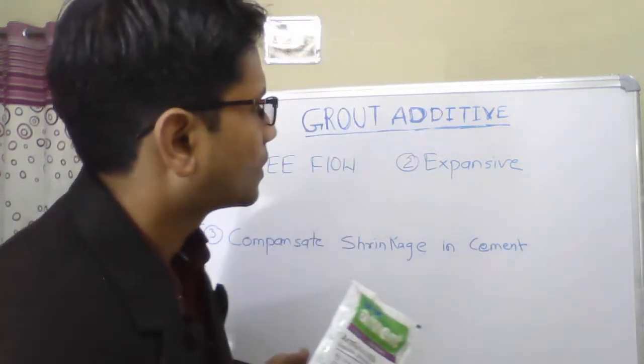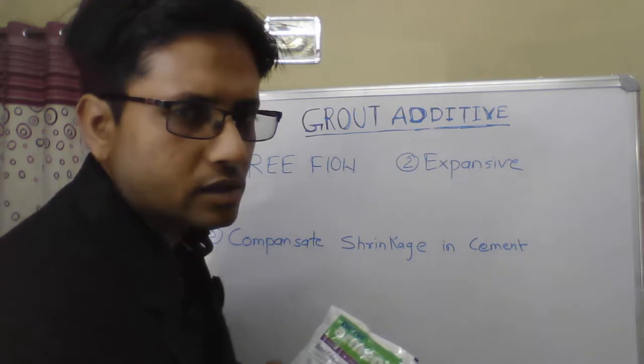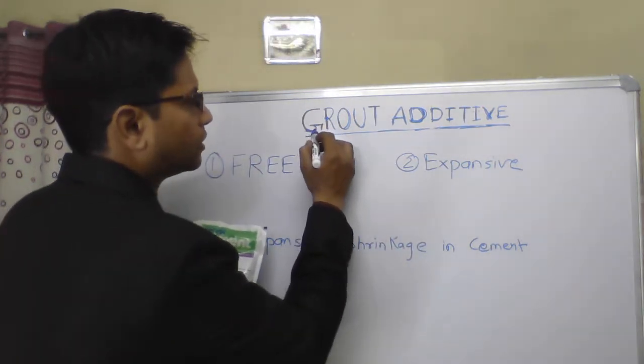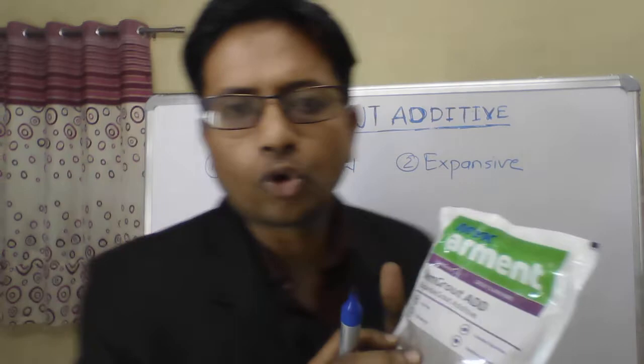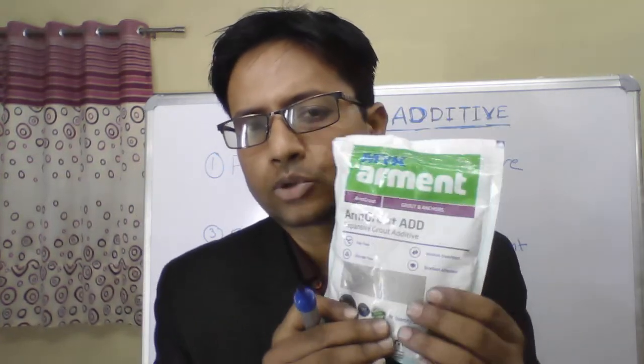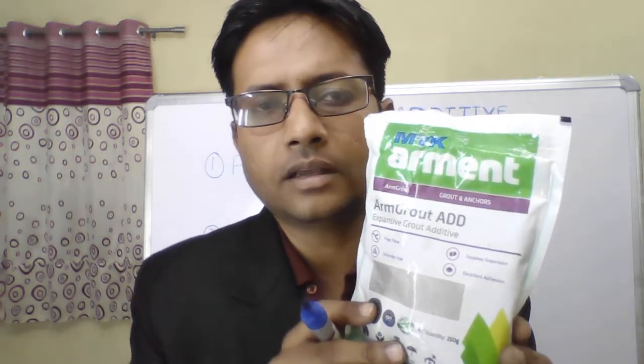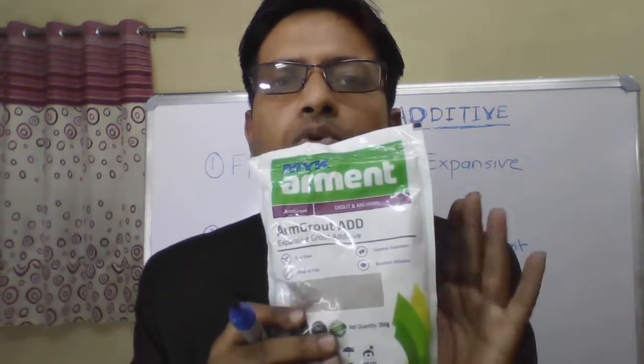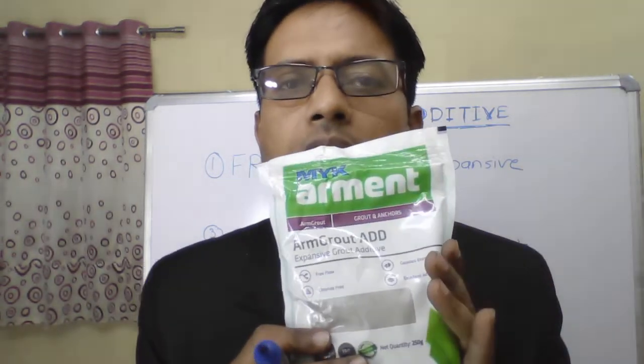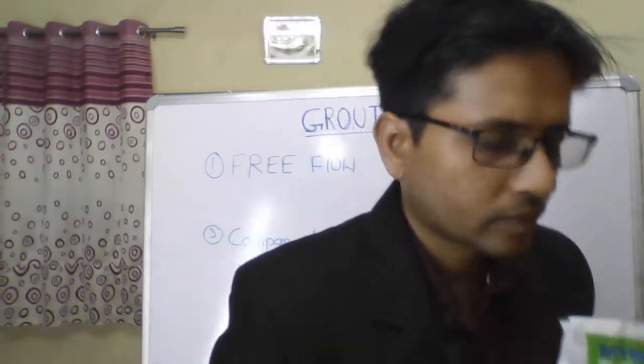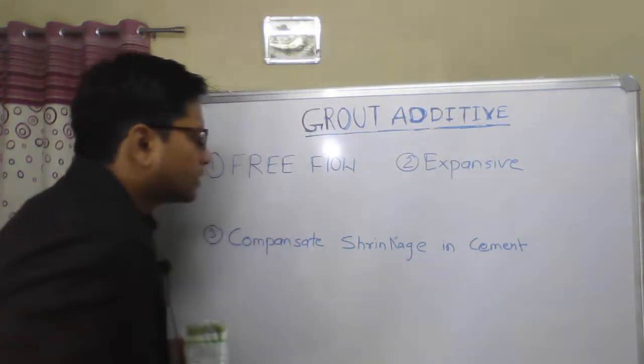So let me quickly show you its features. This is a grouting additive — it is called grout additive. This comes in a 250 gram pouch. It is pre-weighted for one bag of cement. That slurry admixed with this grout additive is then used for injection in pressure grouting.